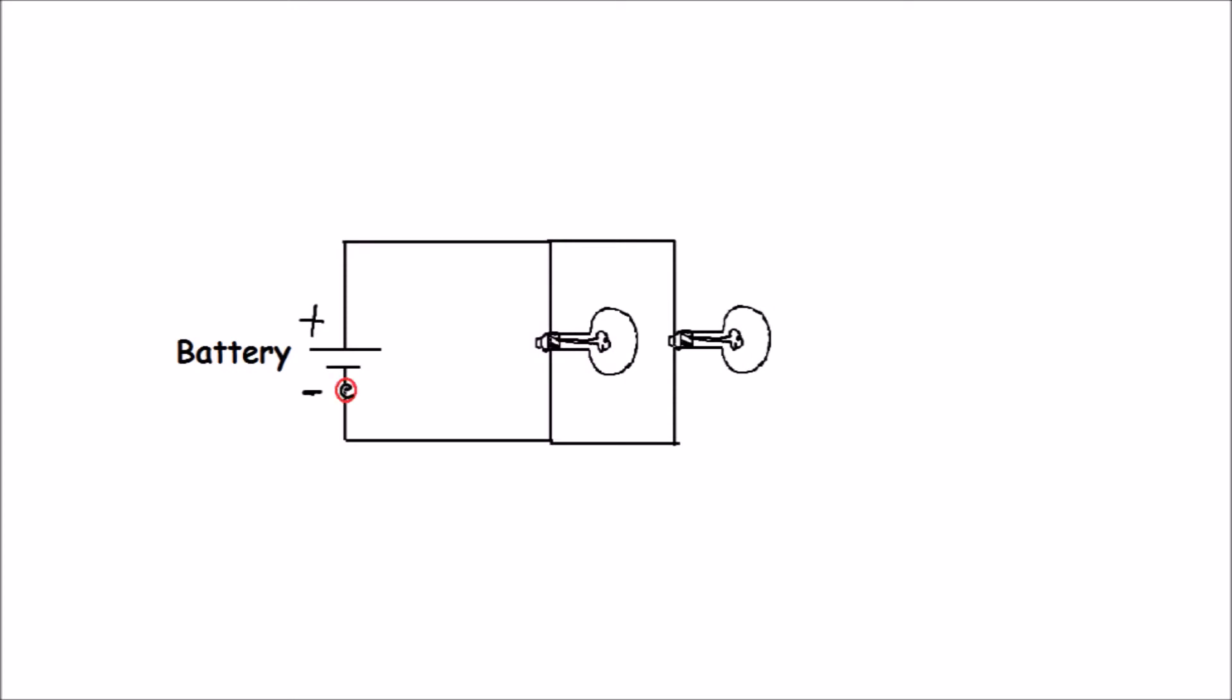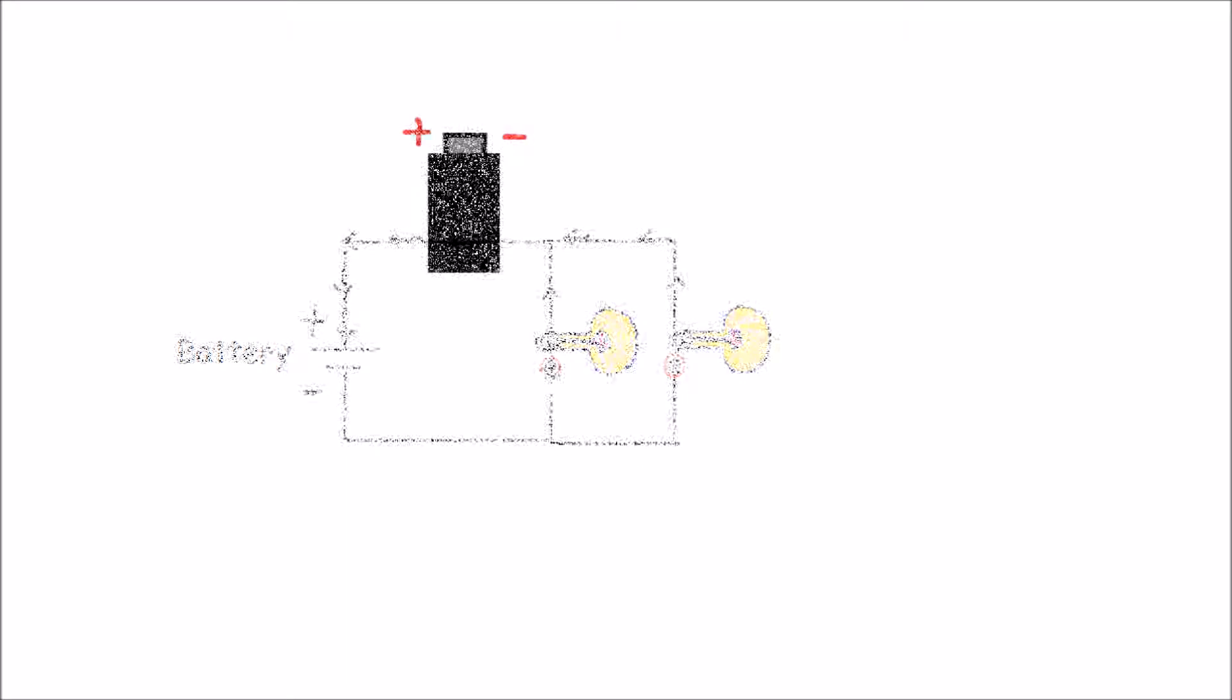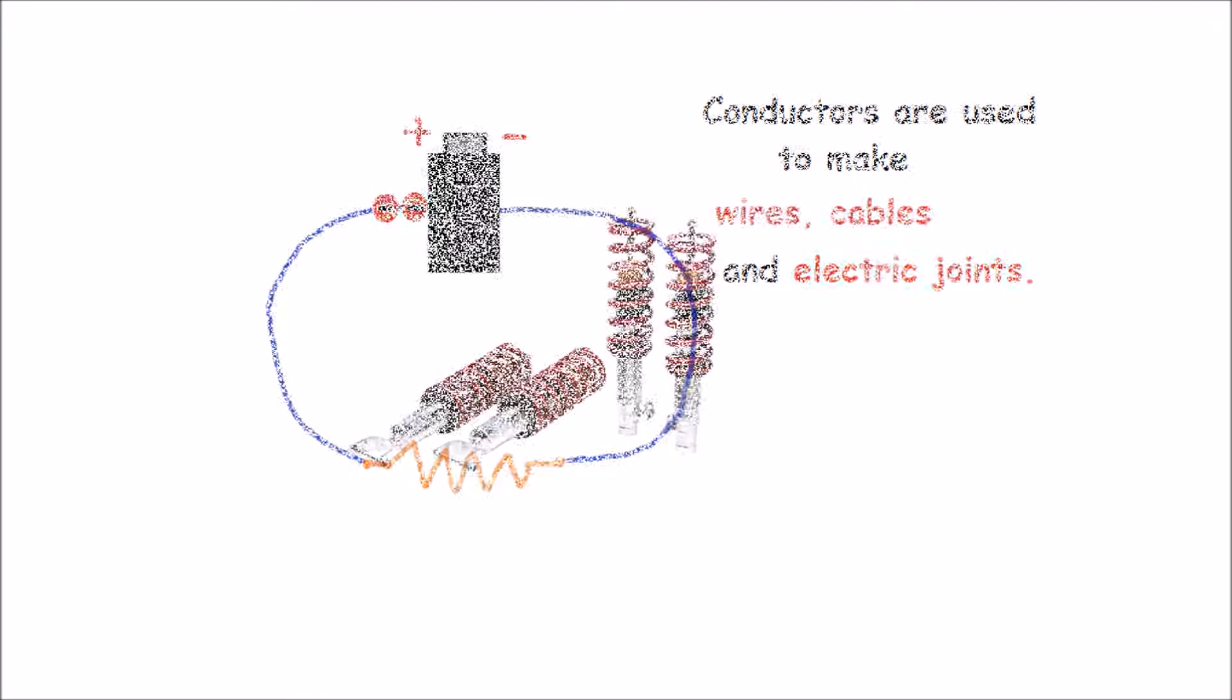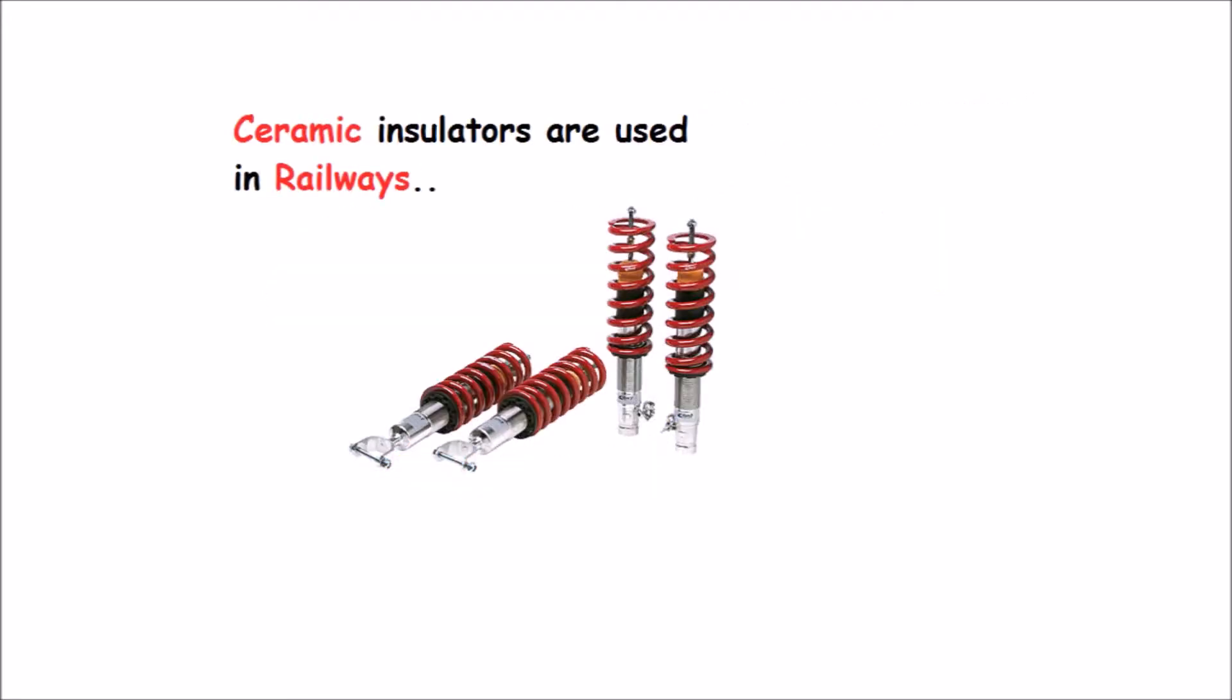Movement of electrons produces electricity. Conductors have some free electrons which can carry electricity, such as copper and zinc. Insulators don't conduct electricity because of not having free electrons, like plastics. They are used to cover wires and plugs to prevent electric shocks.